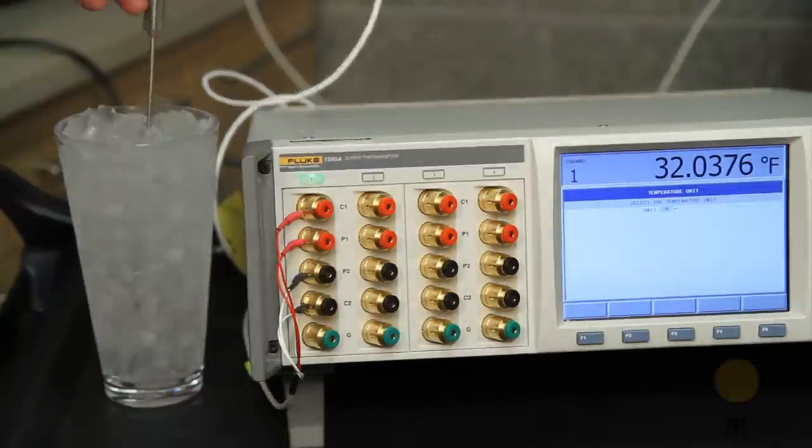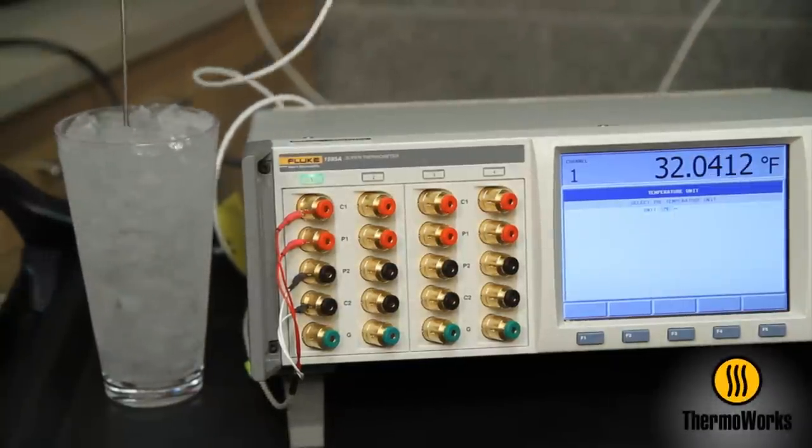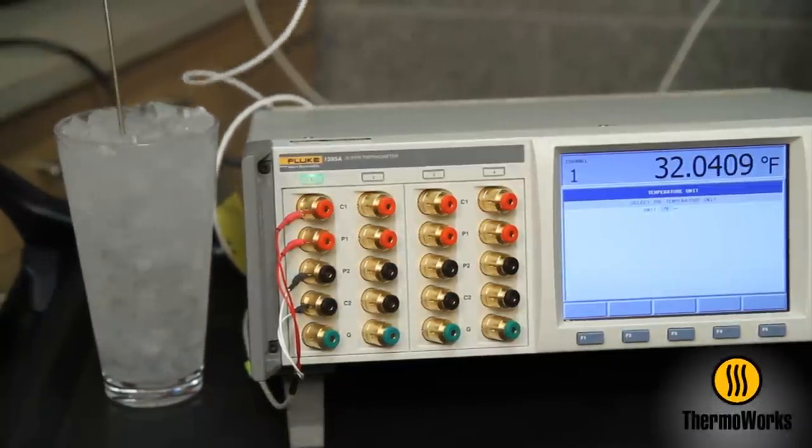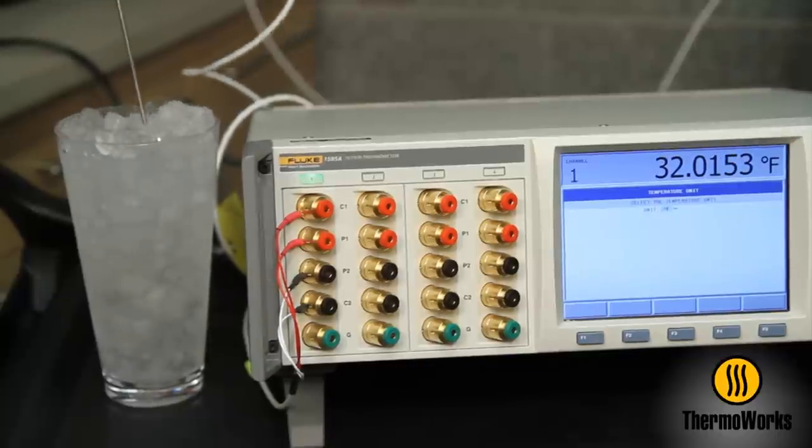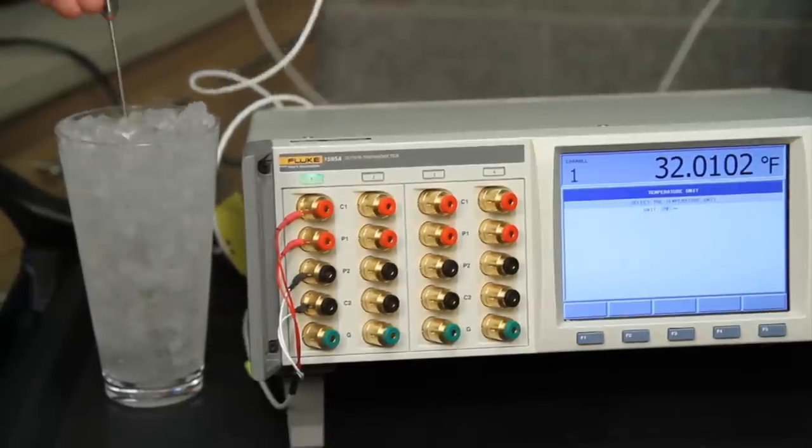Placing the probe in the center of the ice slurry keeps us away from the warmer bottom and sides of the glass, and stirring the probe keeps the sensor from resting against an ice cube, which will affect your reading with these faster, more accurate digitals.